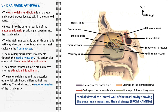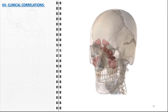Conversely, the sphenoidal sinus and the posterior ethmoidal cells follow a different drainage pathway — they drain into the superior meatus of the nasal cavity, a route that reflects their deeper and more posterior location in the skull. The clinical correlations of the paranasal sinuses encompass a wide range of conditions, reflecting the significance of these structures in both respiratory health and facial anatomy.